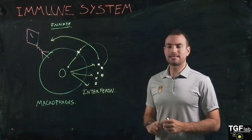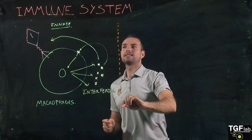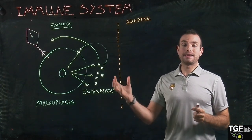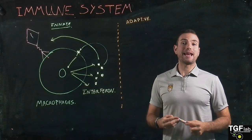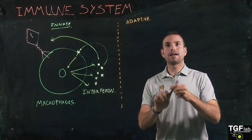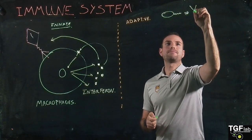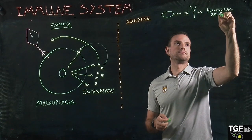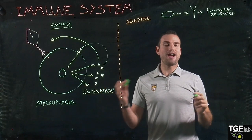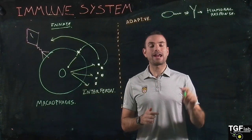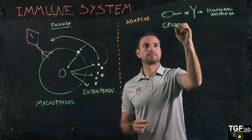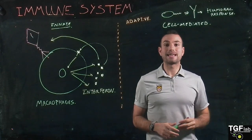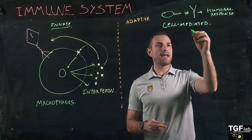This is what happens in the innate immune system. In the adaptive immune system, when a bacteria is present, we have a response mediated by antibodies — this is called the humoral response. But when we have a virus, we don't have this antibody humoral response — we have a cell-mediated response. The cells that are going to mediate the response are the cytotoxic T cells.